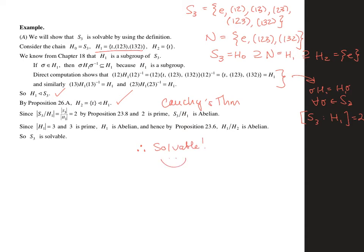Life is pretty good in S3, and that means that if we take any polynomial of degree 3 and look at its Galois group, its Galois group is going to be a subgroup of S3, and subgroups of solvable groups are also solvable. So we know that we're going to end up getting a cubic formula because S3 is a solvable group.